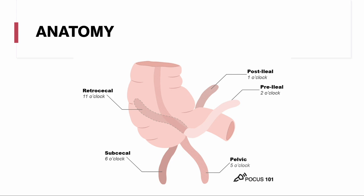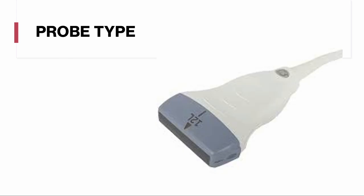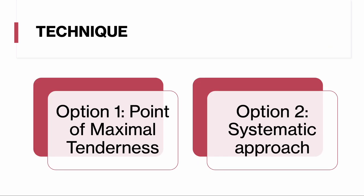The probe type will be the linear probe, but if imaging an older or adult patient, you may switch to the curvilinear for more depth. There are various techniques: one option is to have the patient point to the area of maximal tenderness and start scanning there. The other is a systematic approach — start in the right upper quadrant in transverse orientation with the indicator facing the patient's right, trace the ascending colon downward to the cecum, then move slightly medial and scan in a lawnmower pattern throughout the abdomen until you find the appendix. There's no right or wrong answer; use whatever you're most comfortable with.